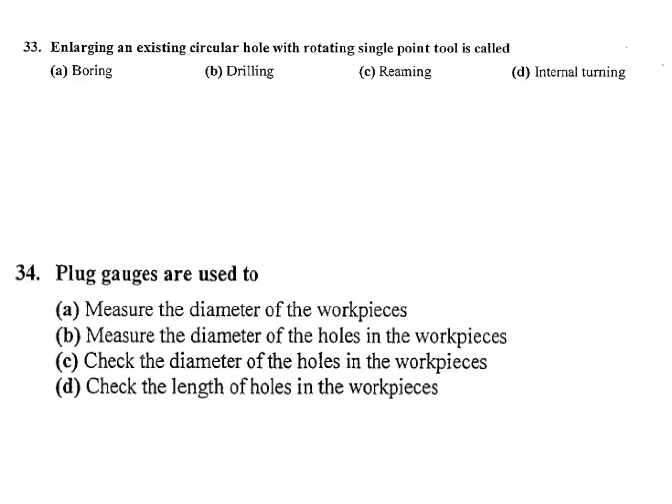Next question: Enlarging an existing circular hole with rotating single point tool is called a) Boring, b) Drilling, c) Reaming, d) Internal turning. Boring. Single point tool. Reaming is multi point, drilling also multi point. Its answer is boring. Enlarging an existing circular hole with rotating single point tool is called boring.